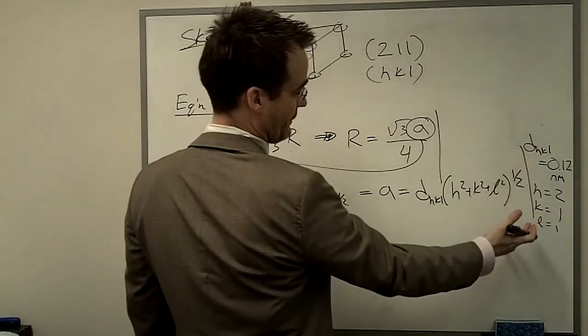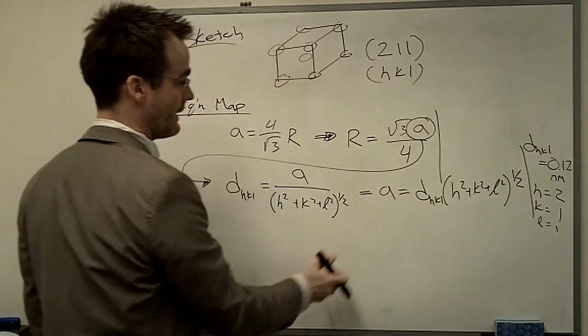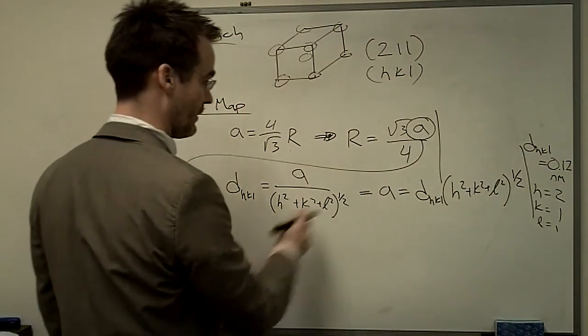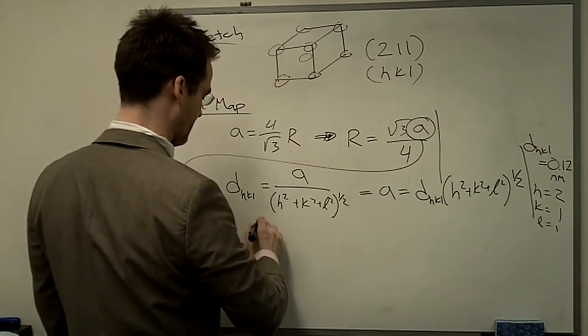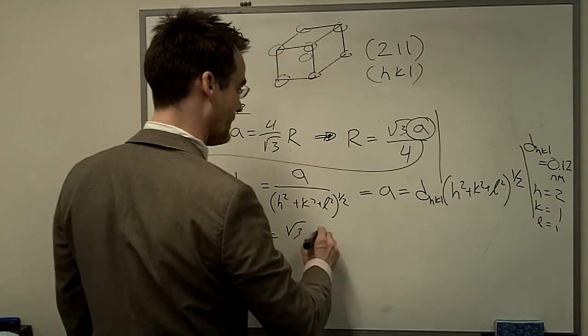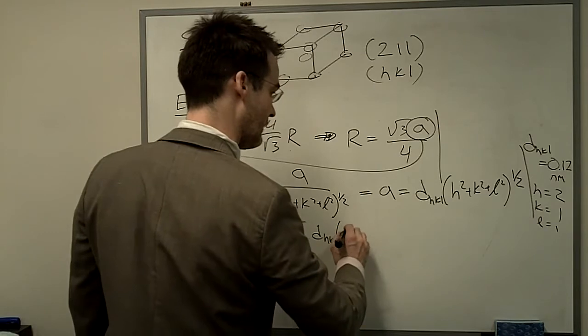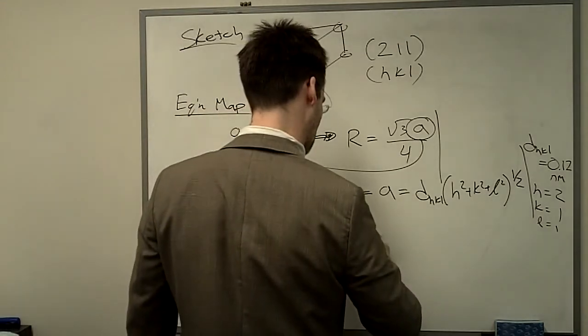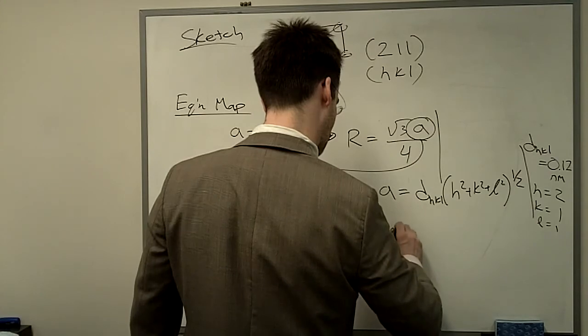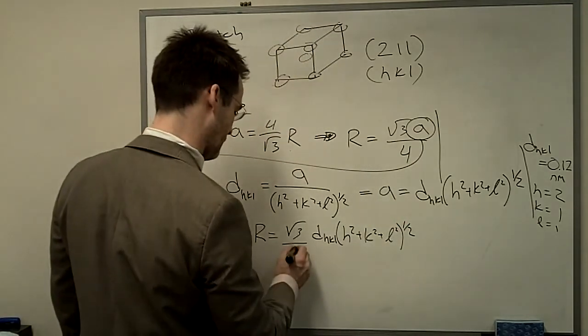So we've just shown, actually, that we have everything on the right-hand side of this expression. So we can go ahead and finish our equation map solving explicitly for radius. So we've got radius equals root 3, d_HKL, times the square root of H squared plus K squared plus L squared, all over 4.